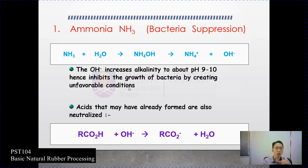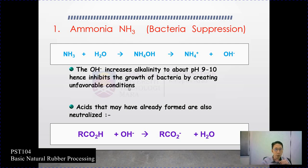Acids that may have already formed are also neutralized. During the tapping process, before collecting the latex, bacteria attack has already started and will reduce the pH of the latex from 6 down to 5, 4, and so on. So by addition of ammonia as an anticoagulant, it will neutralize the acid that has been formed during the collection process.